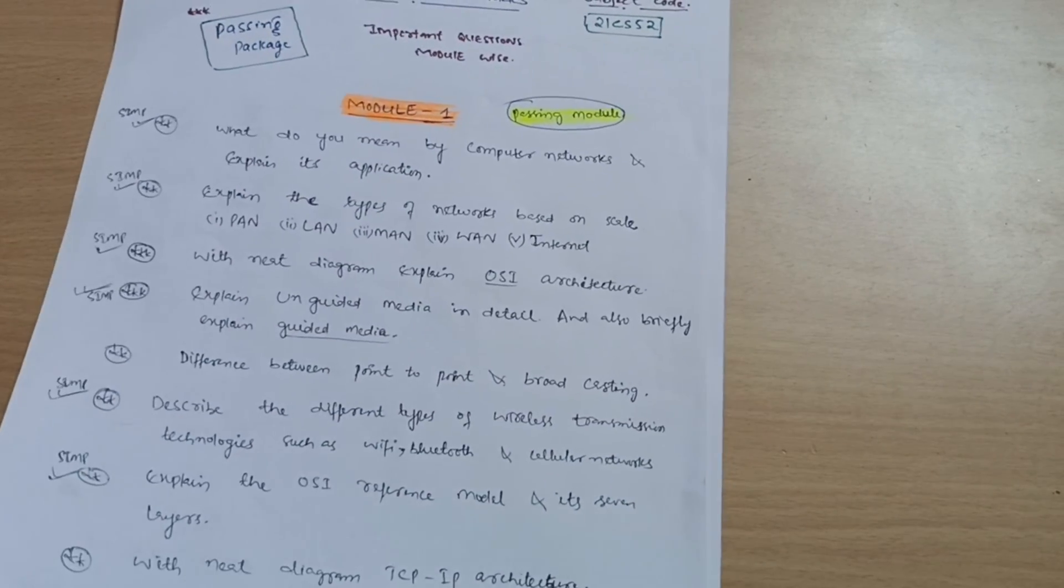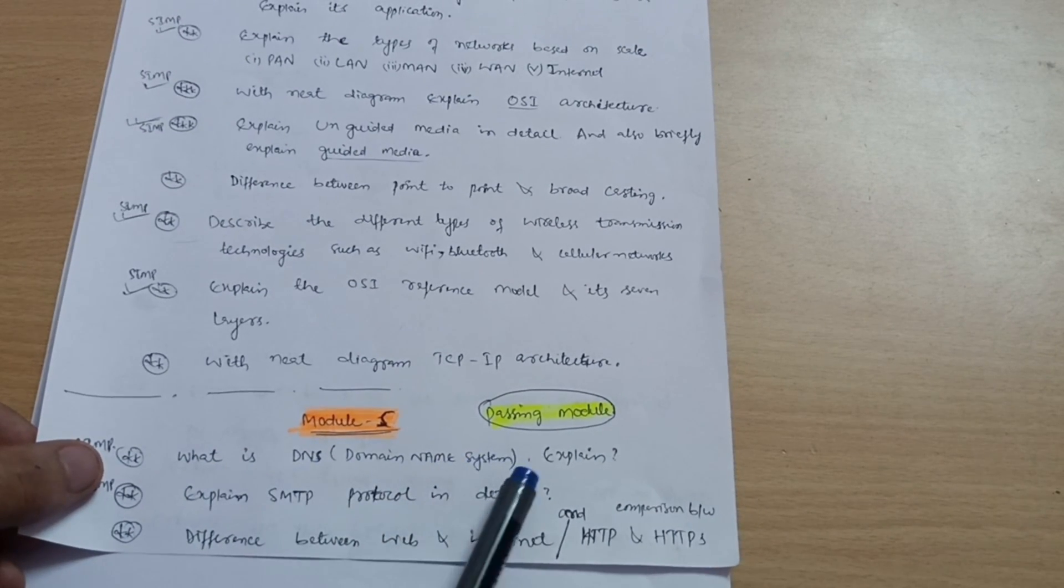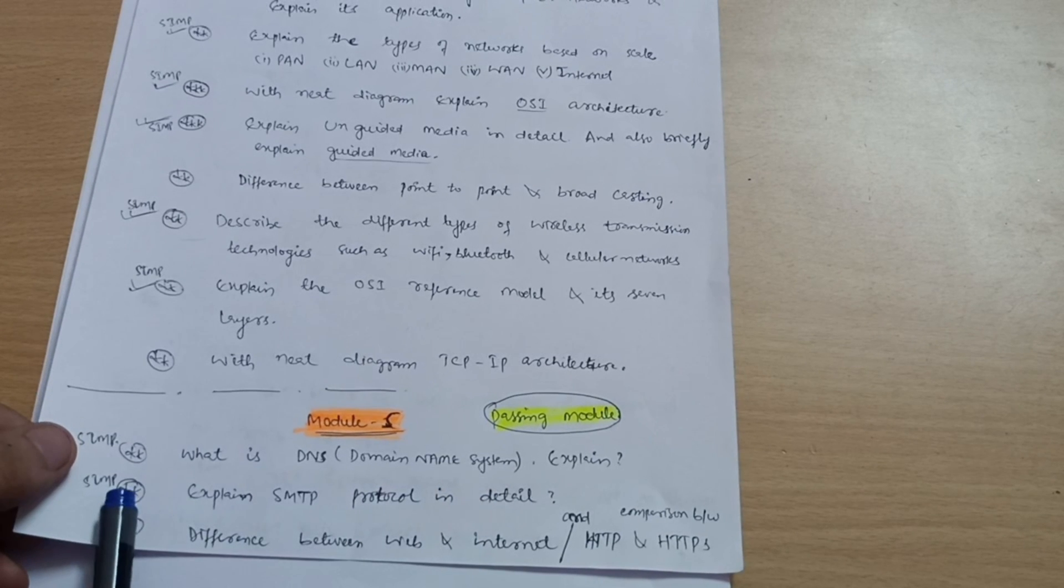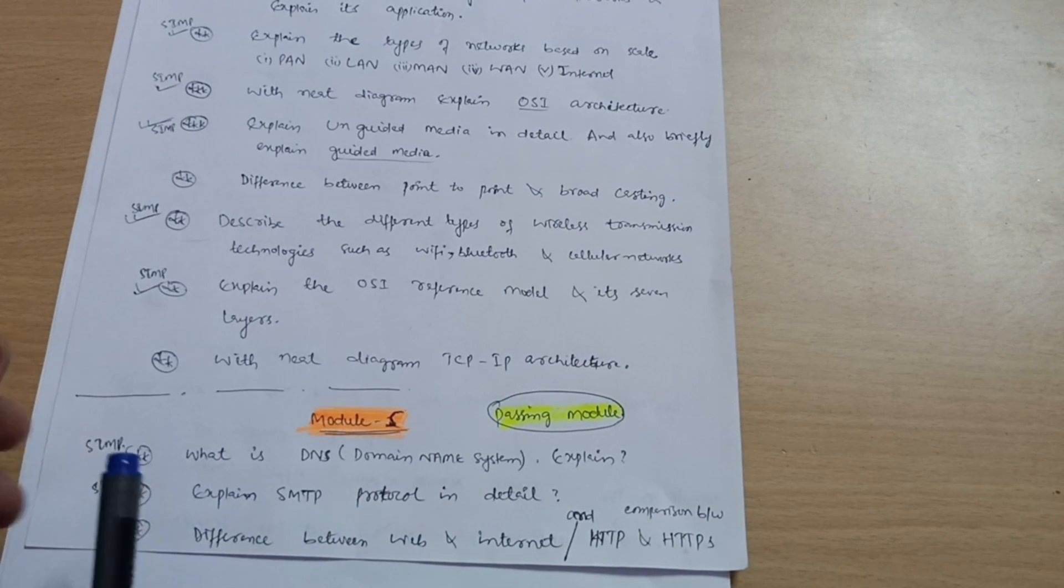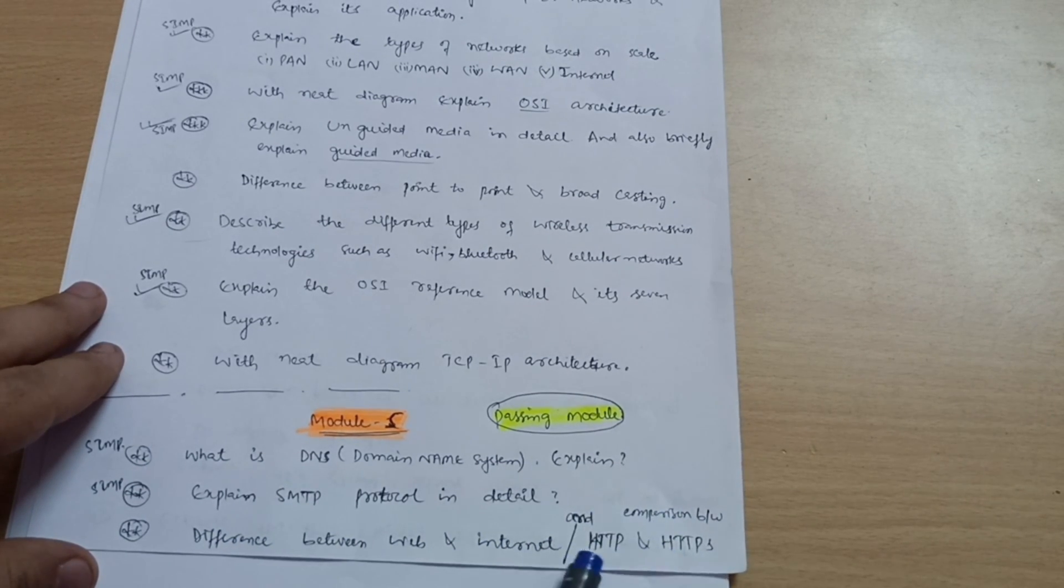Next passing module is Module 5, in which you have to cover: What is DNS (Domain Name System)? Explain and expand SMTP protocol in detail - this is a super important question, almost every time it is asked. Next is difference between web and internet, and sometimes they will ask the comparison between HTTP